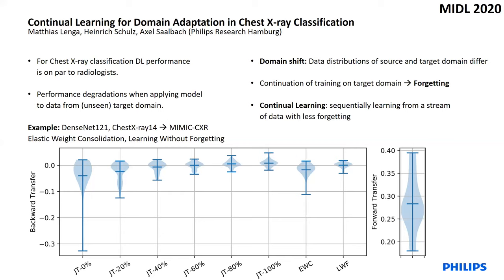Consequently, the continuation of model training is unavoidable if a certain performance is desired on a target domain. Hand in hand with this goes the effect of catastrophic forgetting.